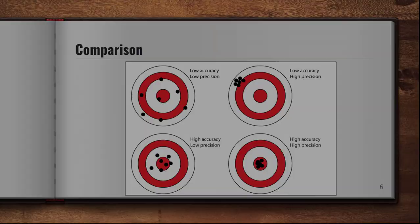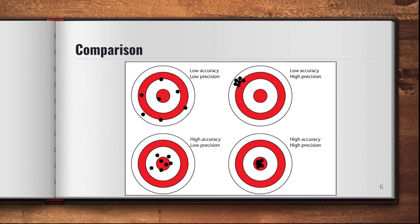Precision is how close the values are to each other; accuracy is how close they are to the target. Looking at bullseye diagrams: the first bullseye shows low accuracy and low precision — none of the data points are close to the target or to each other. The top right shows low accuracy but high precision — data points aren't near the target but are close to one another. The bottom left shows high accuracy but low precision — the average would be near center, but points are spread out. The bottom right shows high accuracy and high precision — all points are close to the target and to each other.